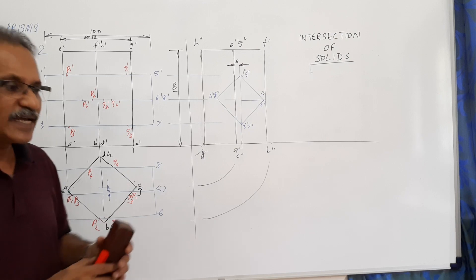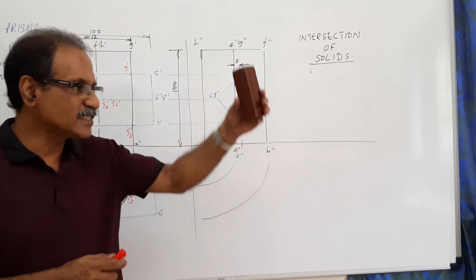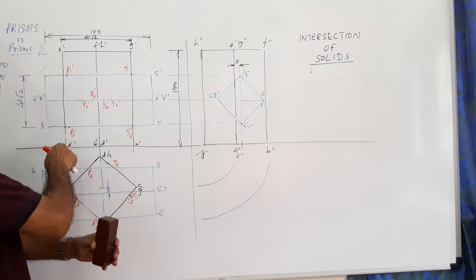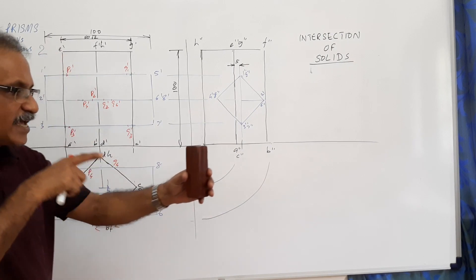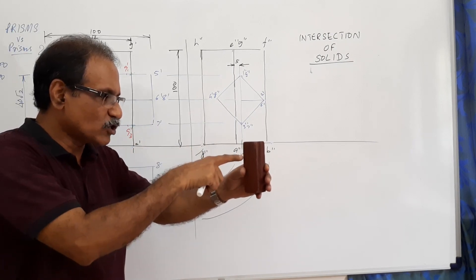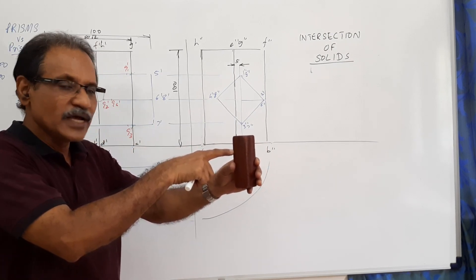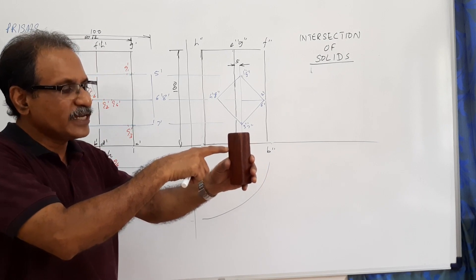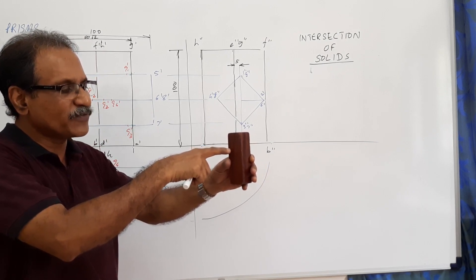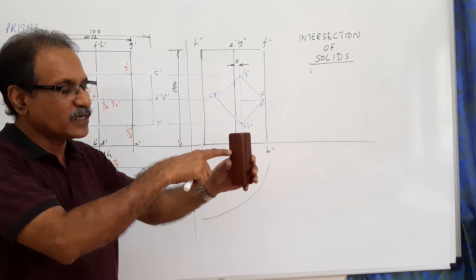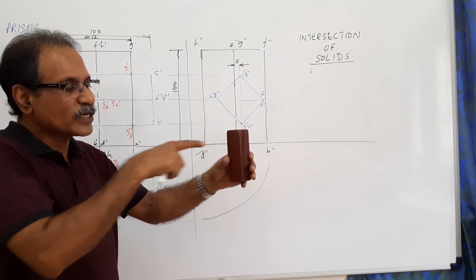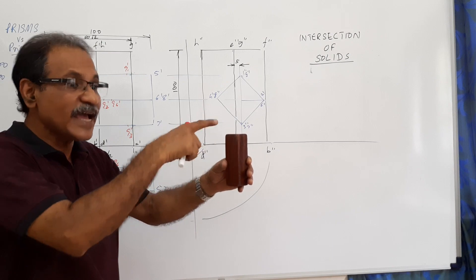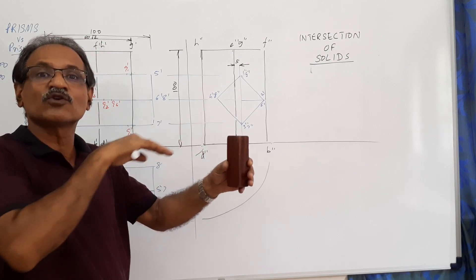Is this sufficient? In the first case, the vertical prism edge A-E (A-dash, E-dash) was cut by the horizontal prism edge 1-5. Here, since the horizontal prism has moved a little distance to the front, edge 1-5 will not cut edge A-E. Instead, edge A-E will cut the surface of the horizontal prism.